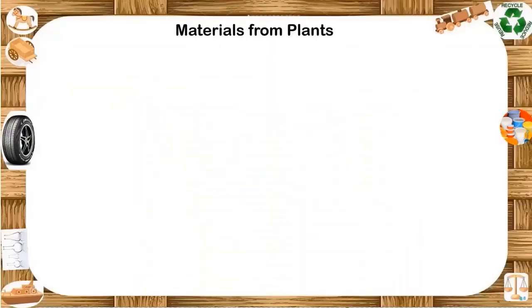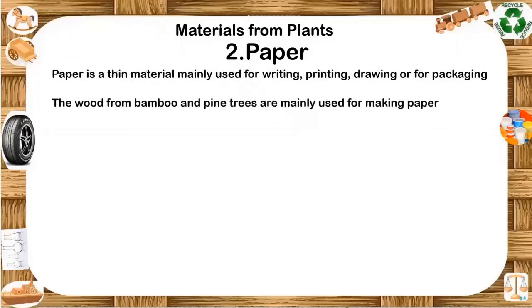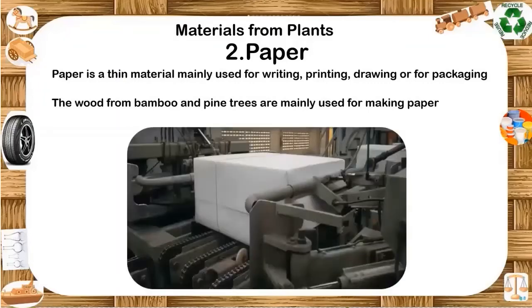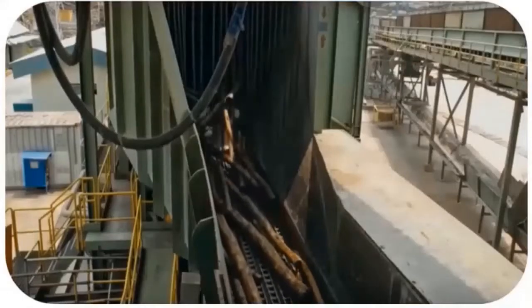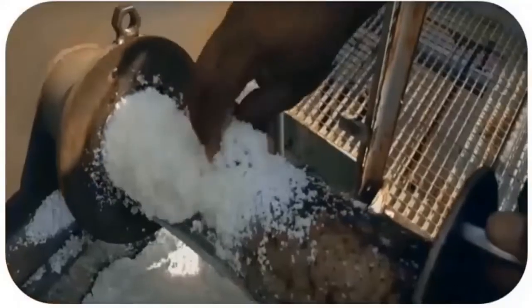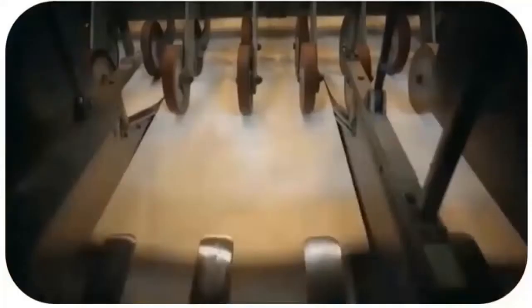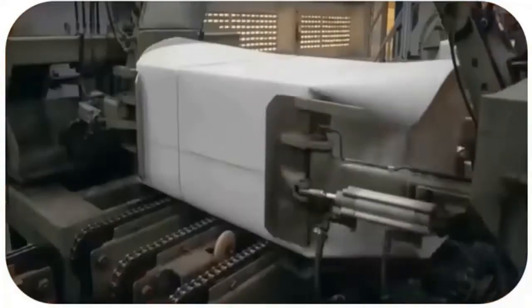Paper is a thin material mainly used for writing, printing, drawing or for packaging. The wood from bamboo and pine trees is soft and mostly used to make paper. To make paper from trees, the raw wood has to be turned into pulp. This pulp is made of wood fibers and chemicals that are mixed together. They can either be processed mechanically or chemically. With chemical pulping, machines grind wood chips into pulp. Huge machines spray the pulp mixture onto moving mesh screens to make a layered mat. The mat is run through heated rolls to squeeze out any remaining water and compress it into one continuous roll of paper.